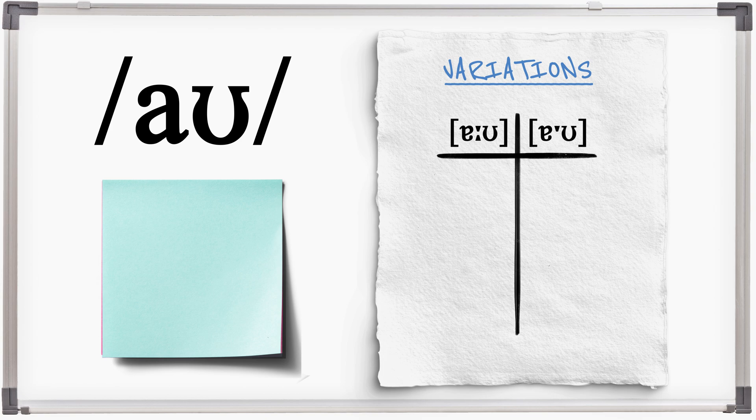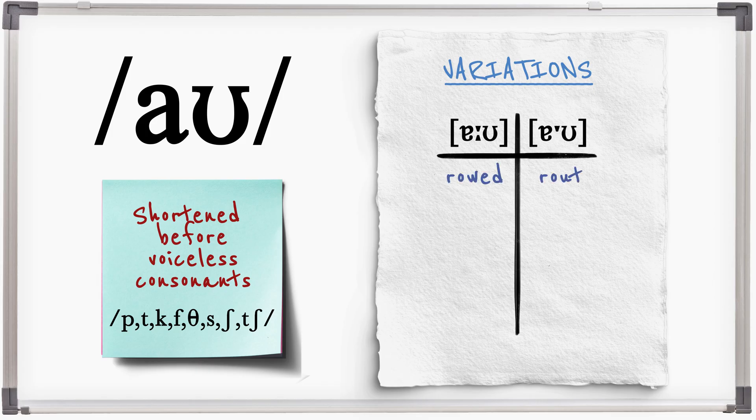AU is a long vowel sound so it will be shortened before voiceless consonants. Compare: rowd, rout, pound, spouse, drown, drought.